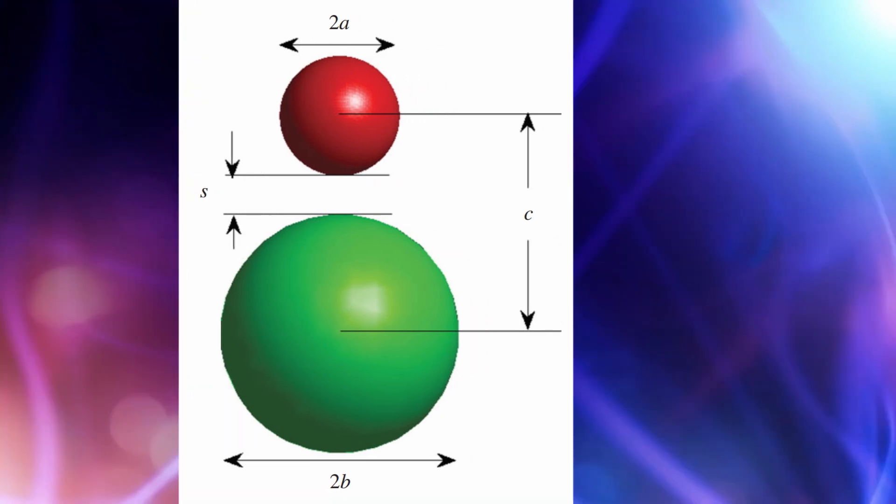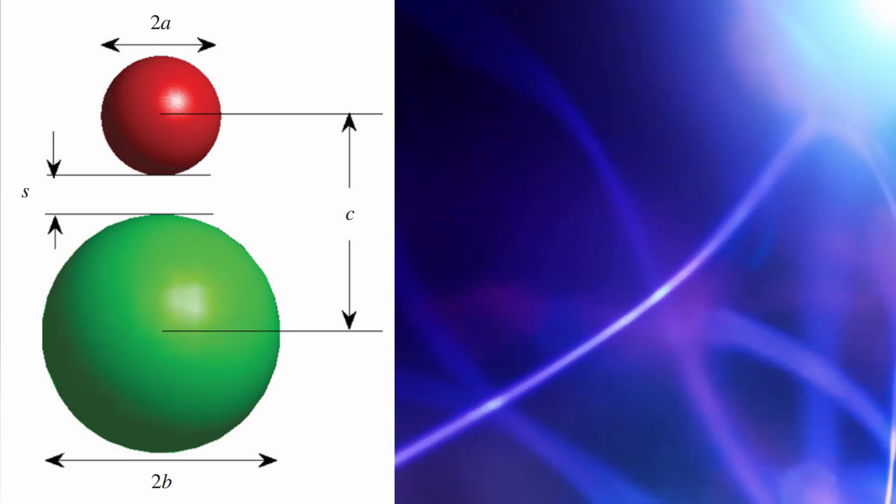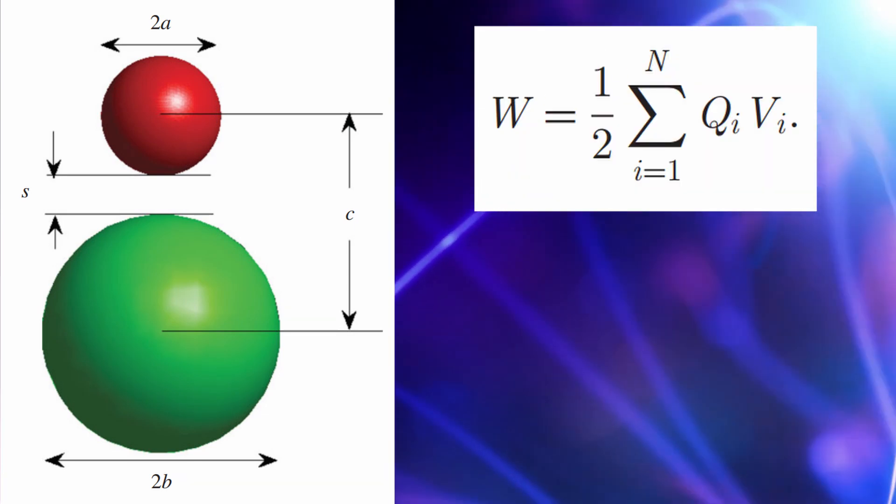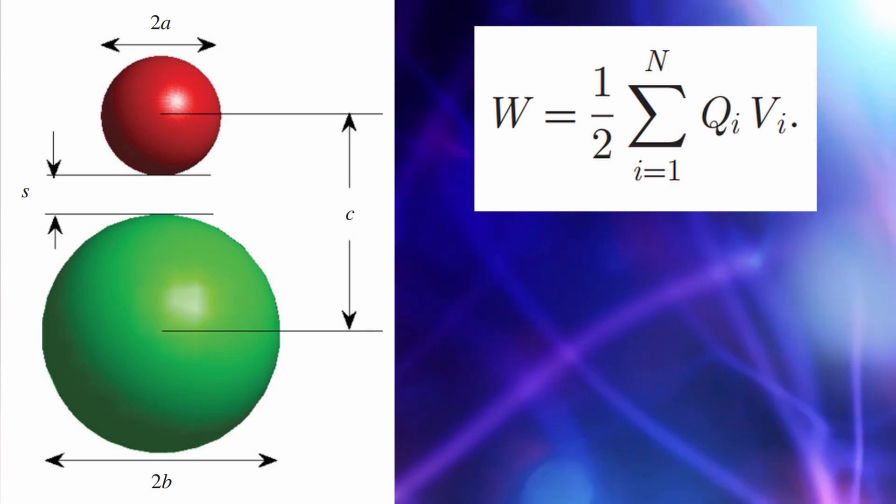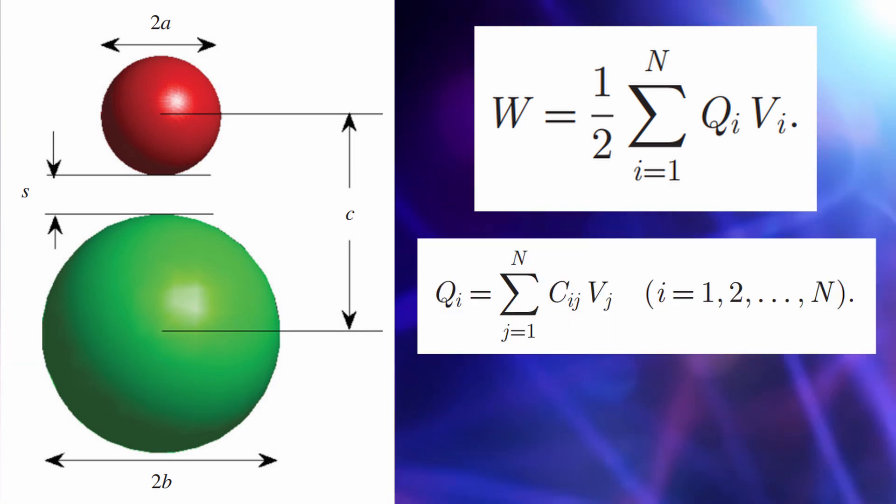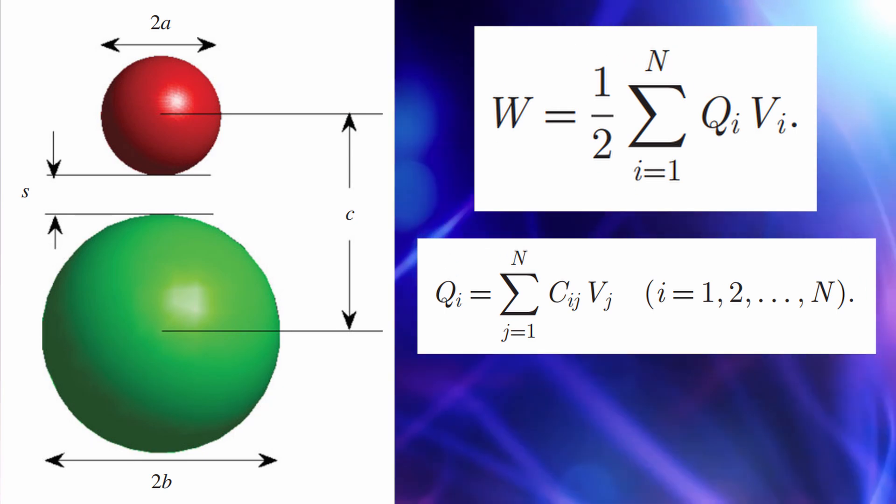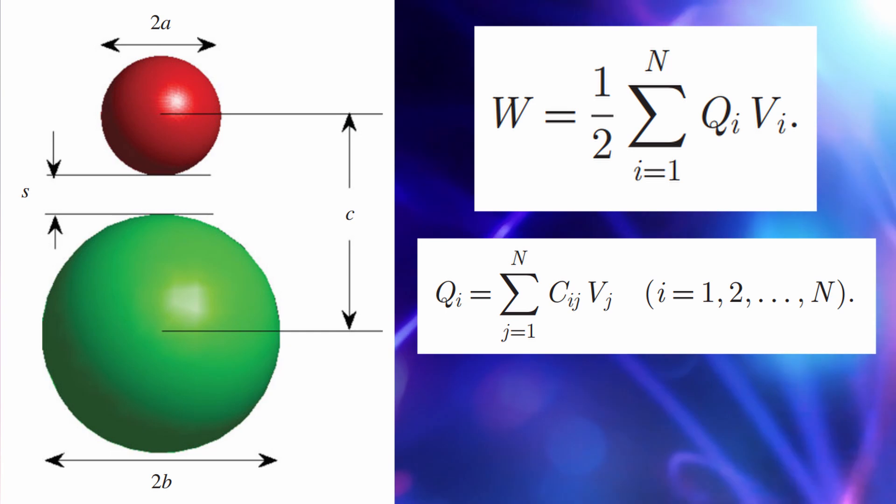The first thing that we need to know is the potential energy of a system of N conductors with charges QI and potentials VI. Now, the charge in this system would be given by QI is the sum of Cij VJ, where Cij is the capacitance coefficient of the system.